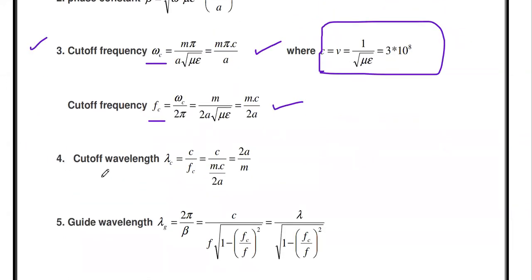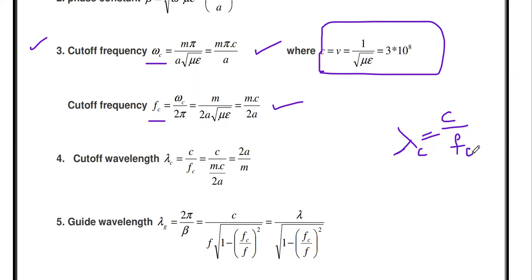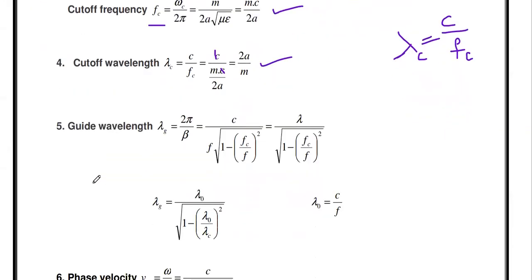The cutoff wavelength is derived from the general formula λ = c/f. For cutoff wavelength, λc = c/fc. Substituting fc = mc/2a, the c cancels and we get the cutoff wavelength formula: λc = 2a/m.